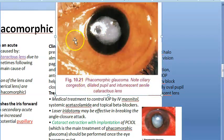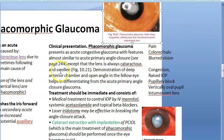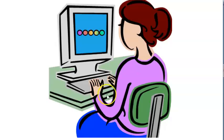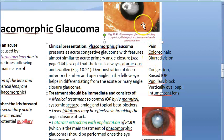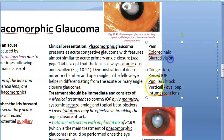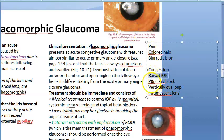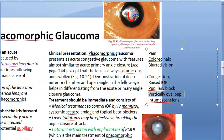You can note ciliary congestion, dilated pupil, and intumescent senile cataractous lens — it is opaque. Patients present with typical angle-closure symptoms: pain due to sudden increased IOP, colored halos, and blurred vision because they already have cataract plus corneal edema. Large vertically oval pupil is very important in angle closure, and you will see intumescent lens here.